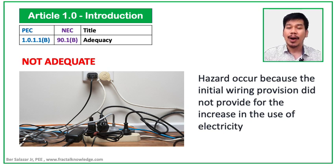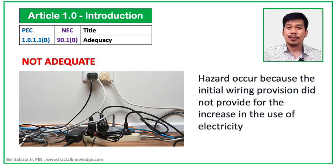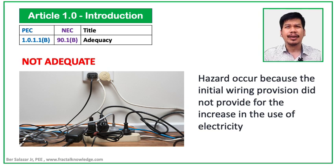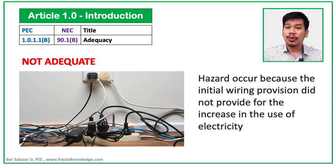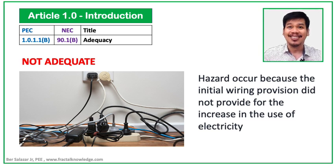Hazards occur because the initial wiring provision did not provide for the increase in the use of electricity, and therefore the wiring system becomes overloaded. You can see this common in a store or with electric appliances at home or in some offices. Provision for the increase in load was not projected due to changes in activity in the use of the area. However, in my years of experience, I saw designers compute too much allowance for load growth. In terms of economics, the initial investment is high and the owner shoulders all the costs, but over the years, the factor on load growth was not used. What we need to do is design an electrical system that is adequate, and it should be stated in the design brief, which is not included in the electrical plan. You should ask that to the electrical designer.